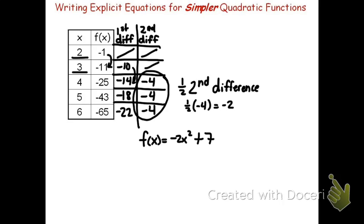If you want to be really sure, try it on one more number in your head. 4 squared is 16. 16 times negative 2 is negative 32. Negative 32 plus 7 is negative 25. My function works.